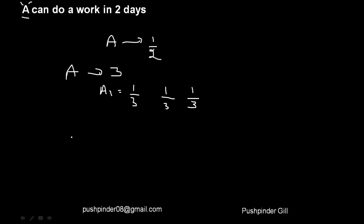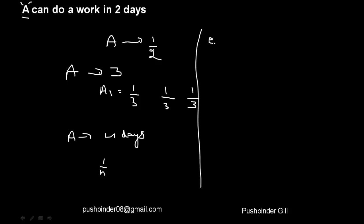To generalize: if A can do a work in n days, every day he will be finishing 1/n of the work. Conversely, if every day A finishes 1/8th of the work, that means it is going to take 8 days for A to finish all the work. So if A can do a work in n days, he finishes 1/n of the work every day, and if A does 1/n of the work every day, he takes n days to finish.